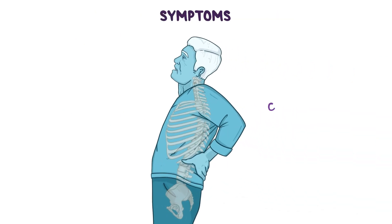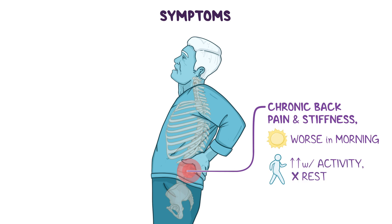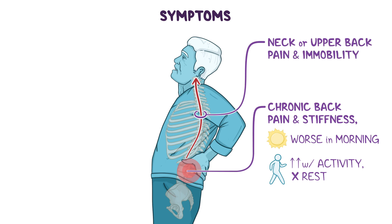The most common symptom of AS is chronic back pain and stiffness, especially in the lower back and buttocks. The pain and stiffness are usually worse in the morning and improve with activity, not rest. Over time, pain can extend up the spine and cause neck or upper back pain and immobility.